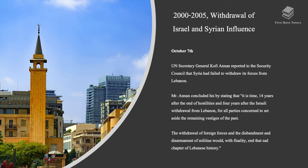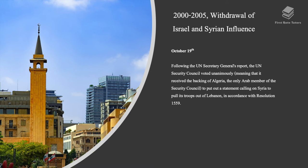On October 7th, UN Secretary General Kofi Annan reported to the Security Council that Syria had failed to withdraw its forces from Lebanon. Annan concluded by stating that it is time — 14 years after the end of hostilities and four years after the Israeli withdrawal from Lebanon — for all parties concerned to set aside the remaining vestiges of the past. The withdrawal of foreign forces and the disarmament of militias would finally end that sad chapter of Lebanese history. The UN Security Council then voted unanimously to put out a statement calling on Syria to pull its troops out of Lebanon in accordance with Resolution 1559.